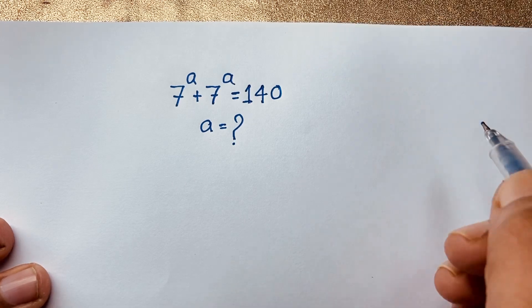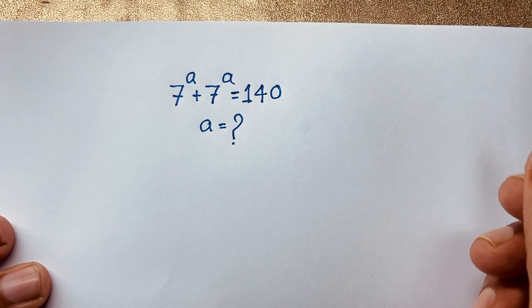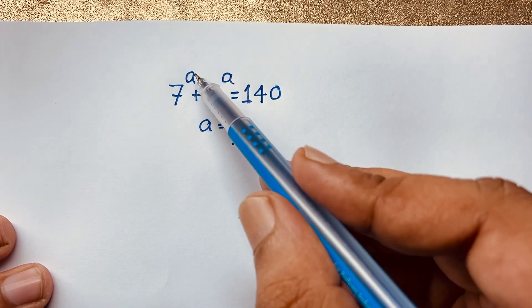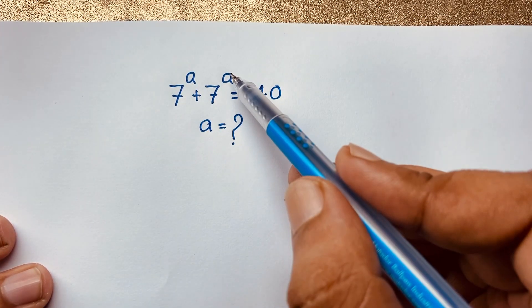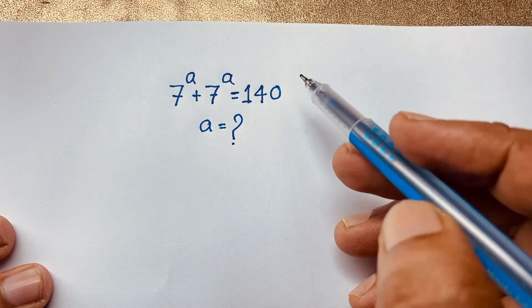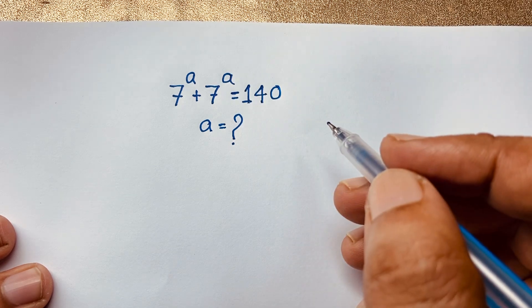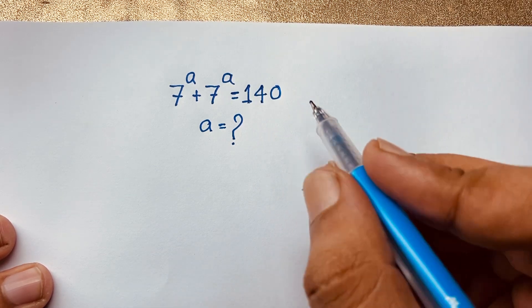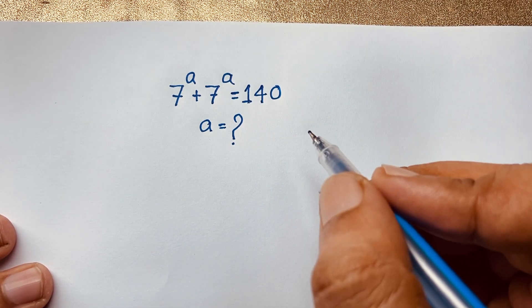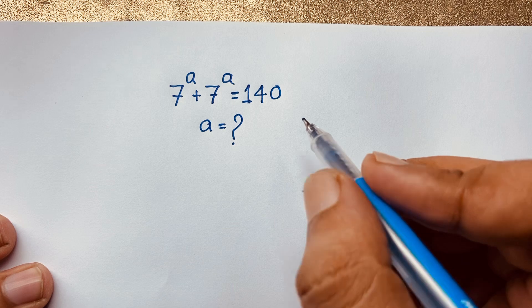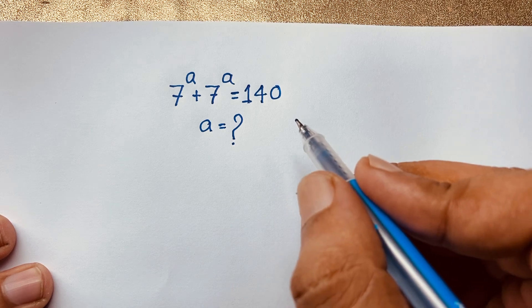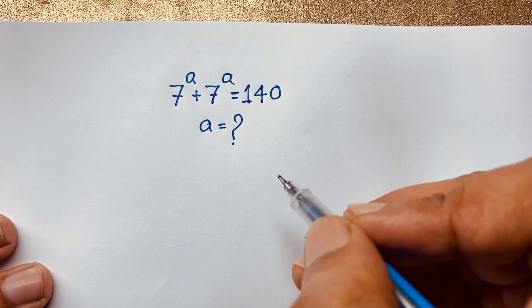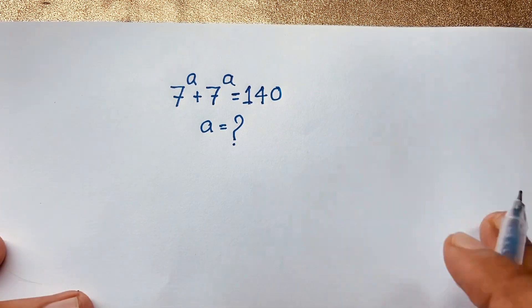Hello everyone, welcome to my YouTube channel. Here is the problem: 7 to the power a plus 7 to the power a is equal to 140. Find a. How to solve this interesting exponential math problem. Solution: